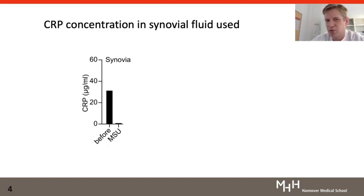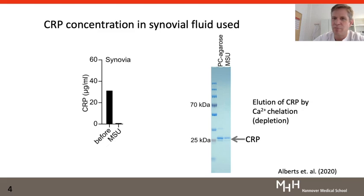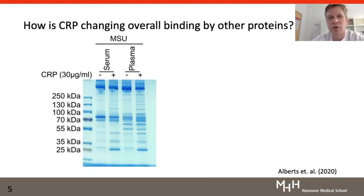This means that principally you should also be able to use MSU crystals to purify CRP from human body fluids. And we compared the ability of MSU to purify CRP with the ability of a commercial ligand, phosphocholine agarose, which is sold for purification of CRP. Both can purify CRP to a similar purity, while the PC agarose of course has a higher binding capacity. But still, this suggests that the interaction of CRP with MSU is similar to the interaction of CRP to its other ligands.